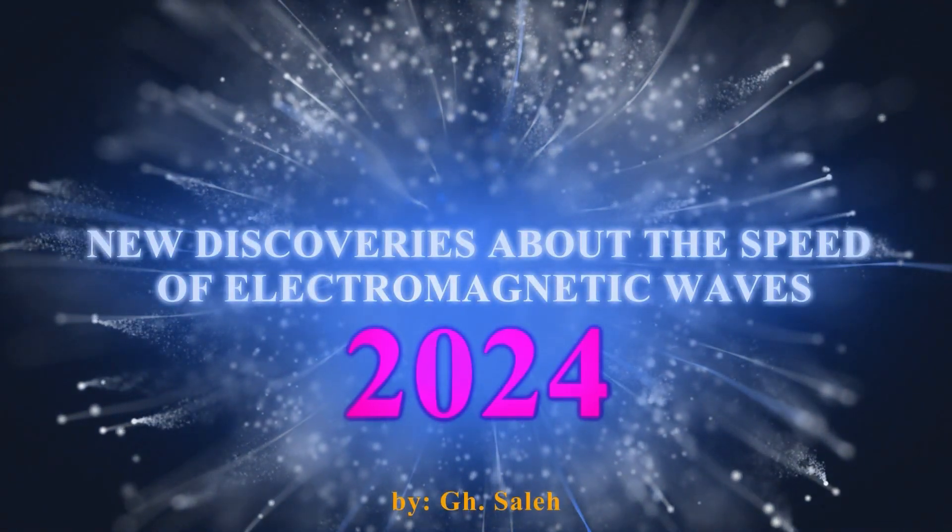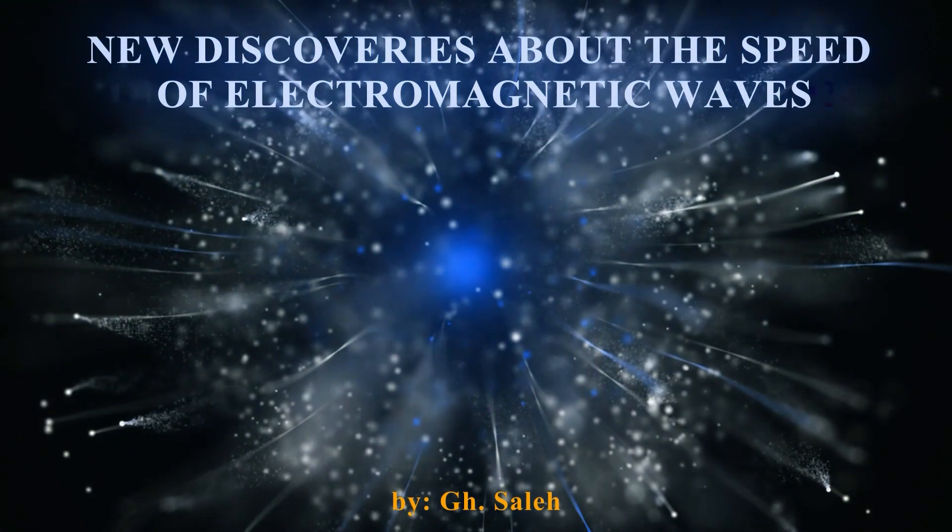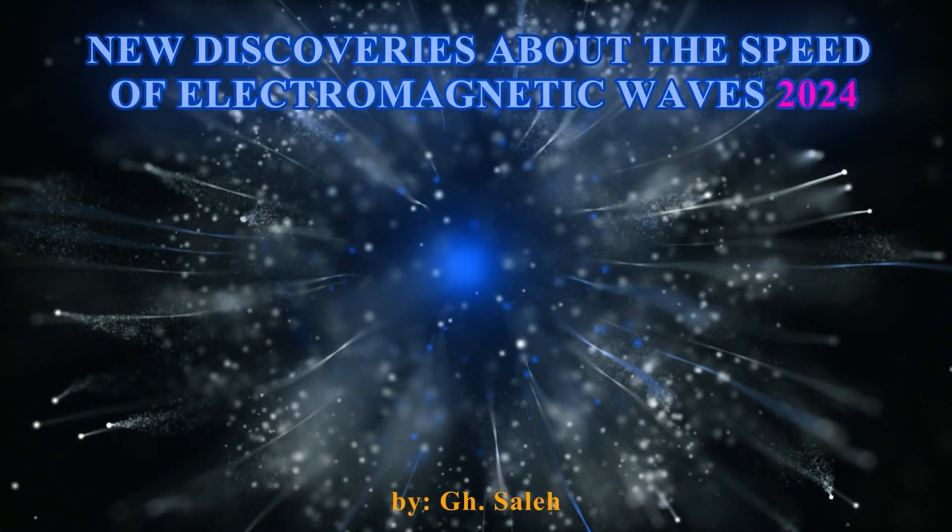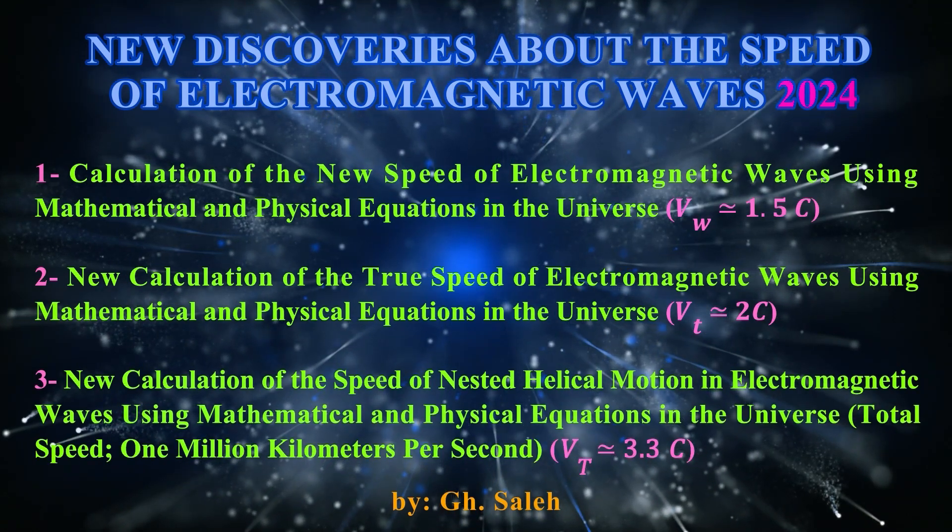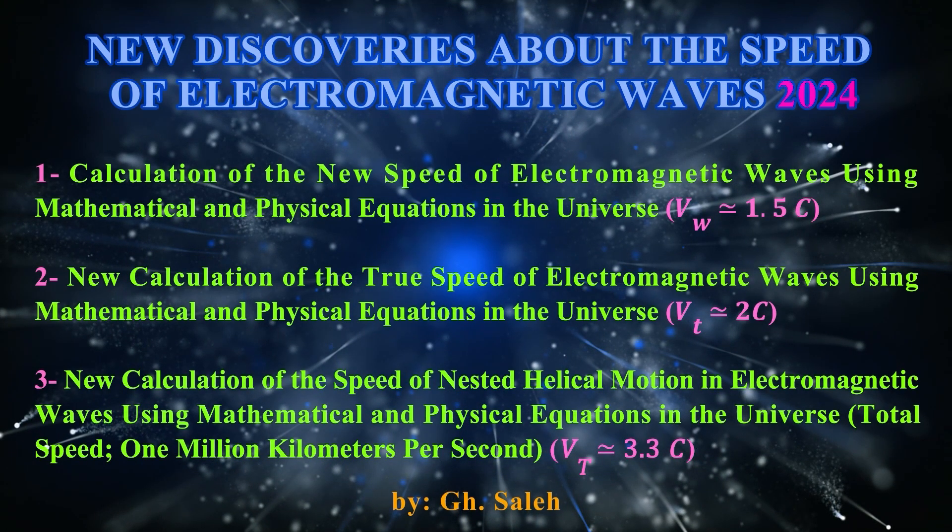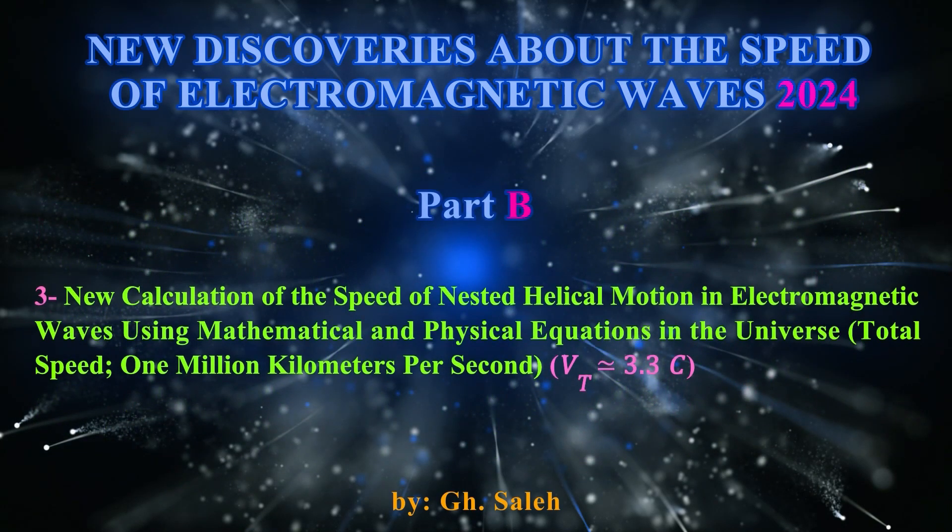New Discoveries About The Speed Of Electromagnetic Waves 2024. 1. Calculation Of The New Speed Of Electromagnetic Waves Using Mathematical And Physical Equations In The Universe. 2. New Calculation Of The True Speed Of Electromagnetic Waves Using Mathematical And Physical Equations In The Universe. 3. New Calculation Of The Speed Of Nested Helical Motion In Electromagnetic Waves Using Mathematical And Physical Equations In The Universe (Total Speed: 1 Million Kilometers Per Second).